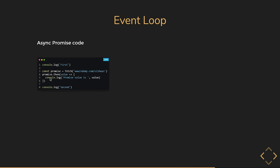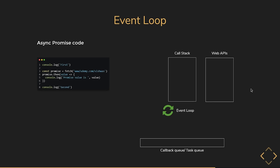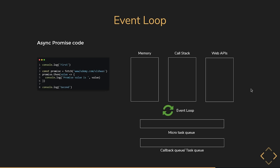On line 4, we add the success callback using the then method — we receive the promise value and log it to the console. On line 8, we have another log statement that logs 'second'. To understand the execution of a promise-based code snippet, we need two more parts to our runtime model beyond what we had for setTimeout: first is the memory heap, and second is another queue called the microtask queue. Let's see how all these parts come together.